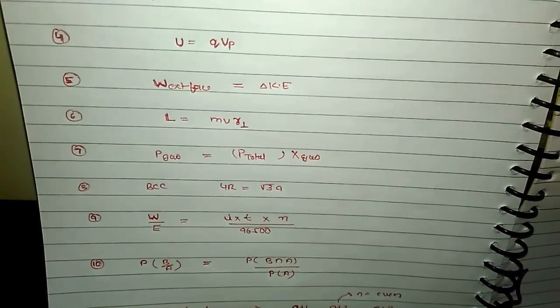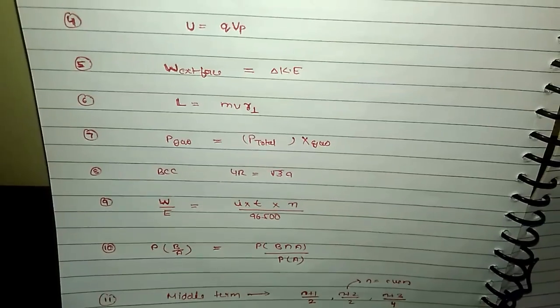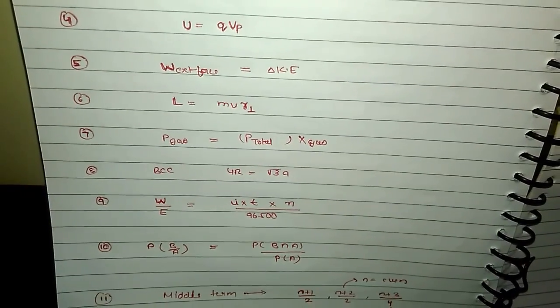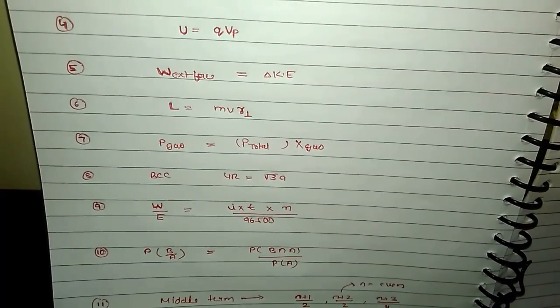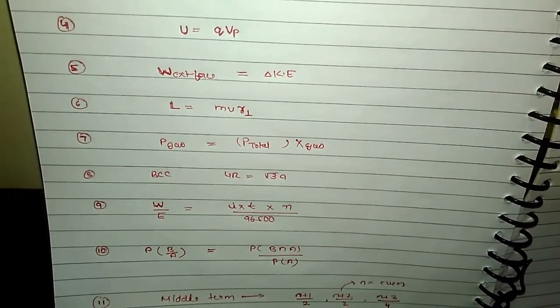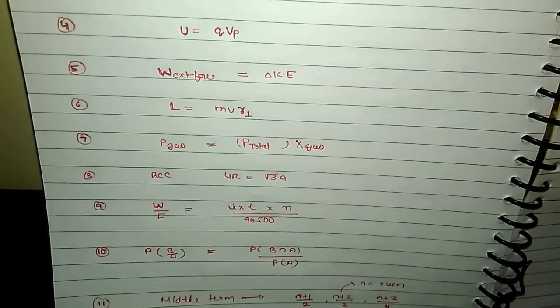For body-centered cubic: 4r = √3 · a. Electrolysis (Faraday's law): weight / equivalent weight = (i × t × n) / 96500.